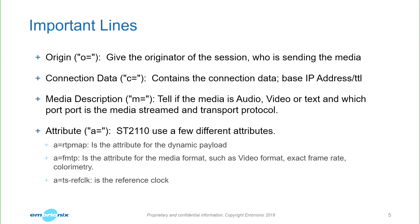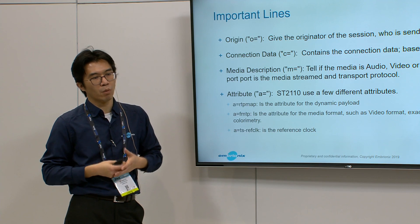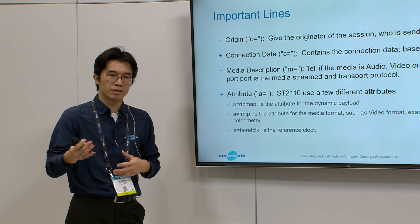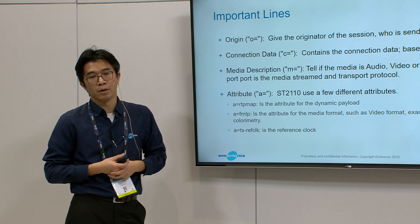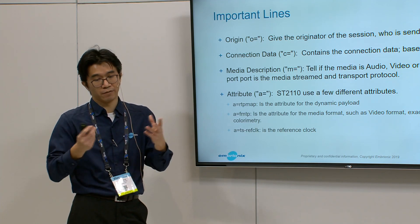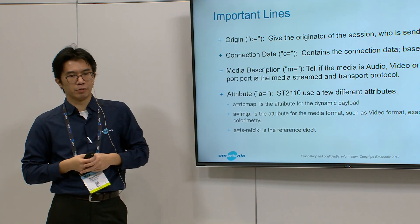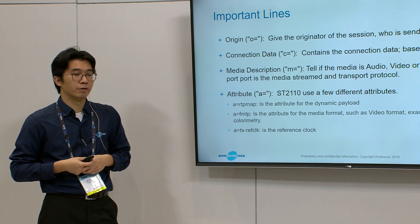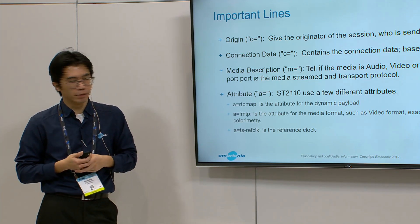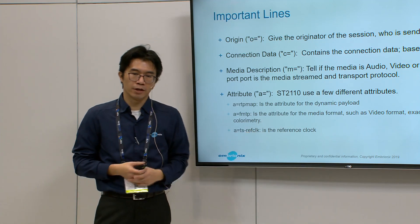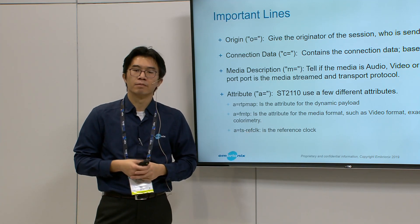The RTP map tells you what type of RTP you're going to be sending out. And the format — this is where the media is described. Are you going to be sending YCBCR 444, 10 bits, is it going to be SDR, HDR, what's the height, what's the width if you're sending video, and also the colorimetry. In 2110, there's also a reference to PTP, so the TS Ref Clock line gives you the master clock ID.